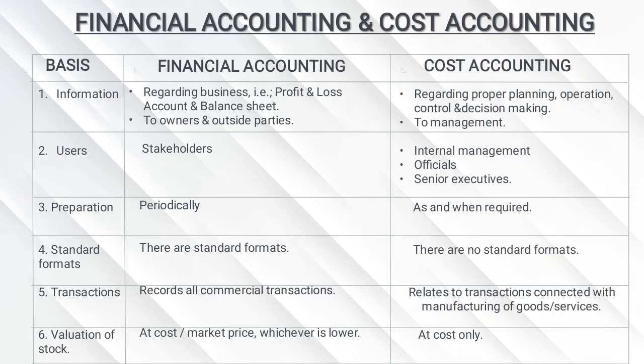Regarding preparation: in financial accounting, reports are prepared periodically. In cost accounting, reports are prepared as and when required. Regarding standard formats: financial accounting follows standard formats, while cost accounting does not have standard formats. Regarding transactions: financial accounting records all commercial transactions, while cost accounting relates only to transactions connected with manufacturing of goods and services.